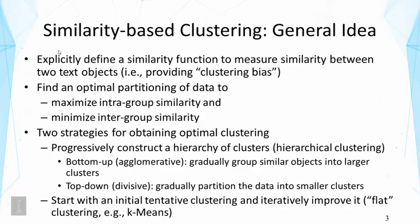Once we have a similarity function, we can aim at optimally partitioning the data into clusters or different groups, trying to maximize the intra-group similarity and minimize the inter-group similarity. That is to ensure objects put into the same group are similar, but objects in different groups are not similar. These are the general goals of clustering, and there is often a trade-off between achieving both goals.